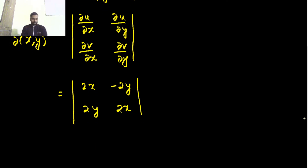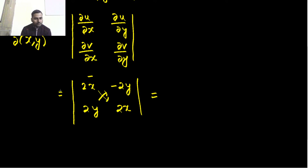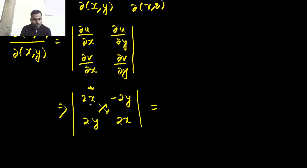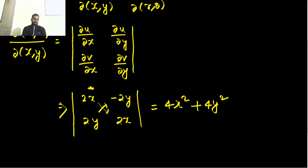Now we calculate the determinant: 2x multiplied by 2x minus 2y multiplied by 2y, which gives 4x square minus minus 4y square, so plus 4y square. This simplifies to 4 times x square plus y square.